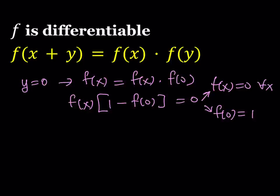For the time being we're just going to ignore the first solution because that just tells us that if f of x is always 0 then this is going to work, and you can clearly see that. Let's focus on the second one where f of 0 equals 1. This is good to know because we're going to use this in our equations.